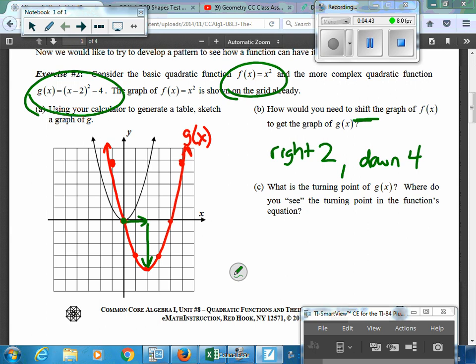So they wanted to say, what is the turning point of g(x)? And in this case, it would be 2, negative 4. And where do we see that in the function's equation? Well, the x value is in the parentheses. And the y value is the constant in that last value.